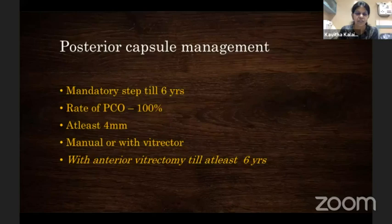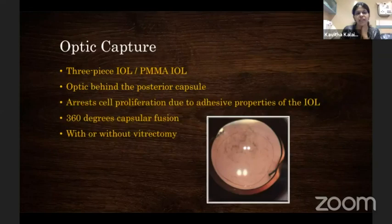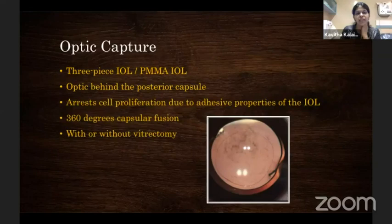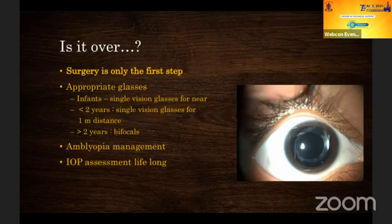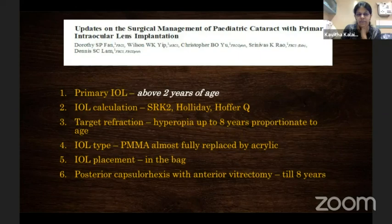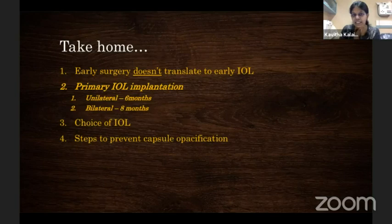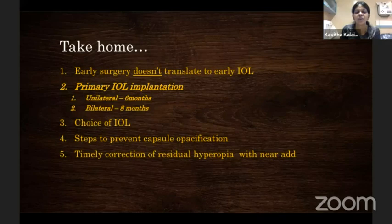Anterior vitrectomy is the preferred choice for posterior capsule management — it is a timeless option, easy to perform, extremely safe, extremely effective, and the gold standard. Optic capture is another technique that can equally prevent PCO formation after surgery. Once surgery is over, amblyopia management and refractive correction are extremely important. Primary IOL implantation is extremely safe above the age of two, or even one now. Standard IOL formulas with target refraction of undercorrection up to the age of eight are used. Acrylic lenses have fully replaced PMMA, and placement in the bag is preferred. Key take-home: early surgery does not necessarily mean early IOL implantation.